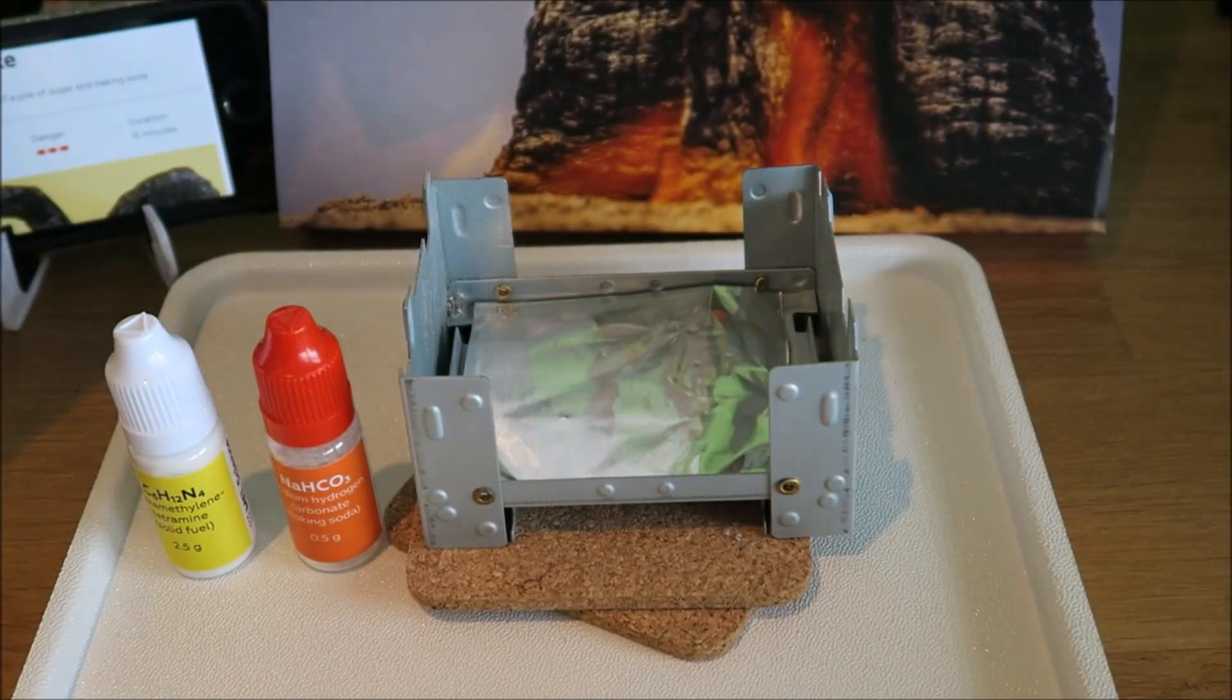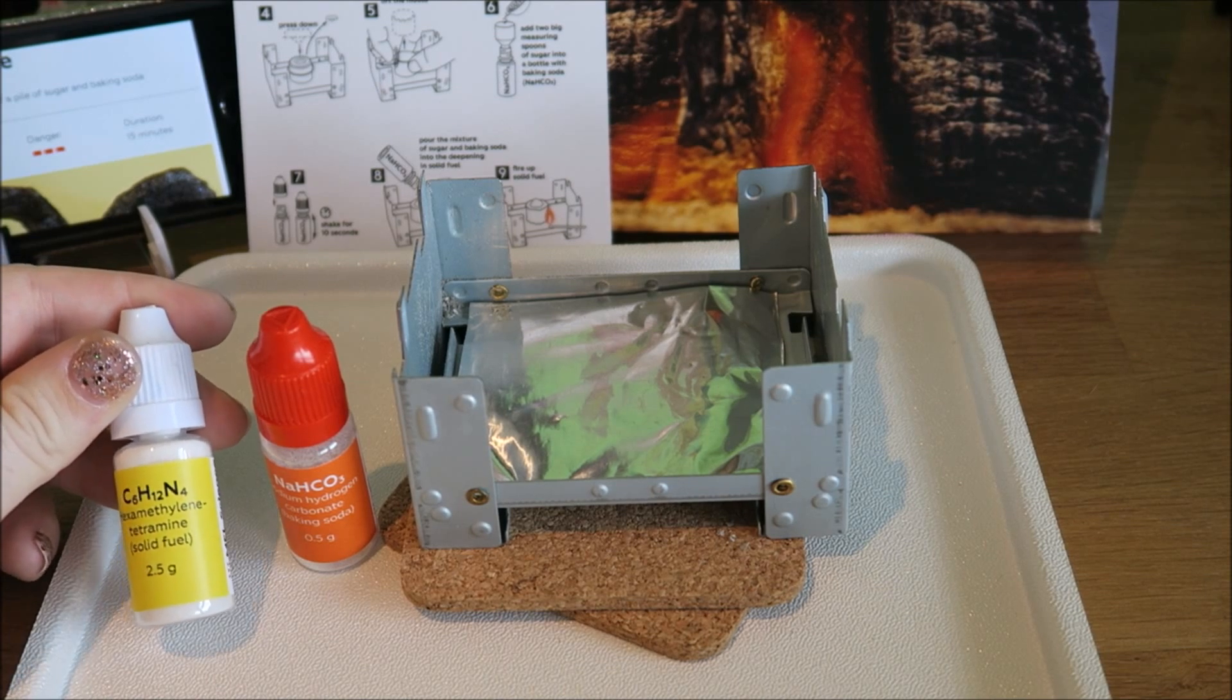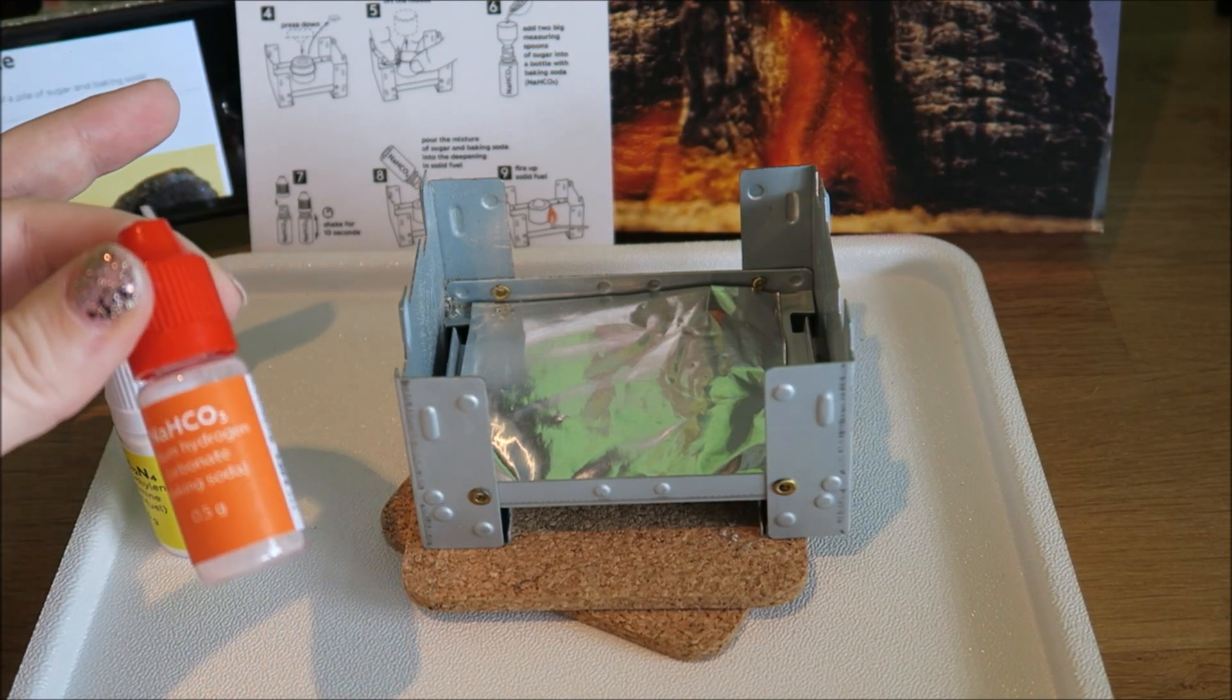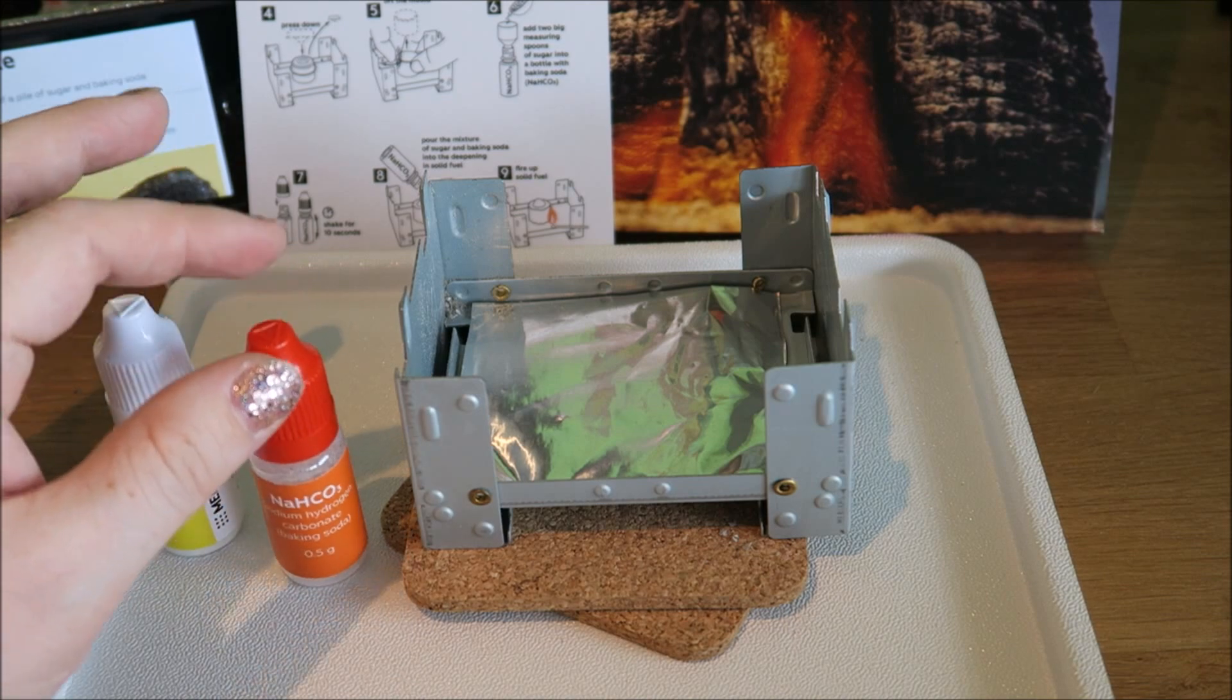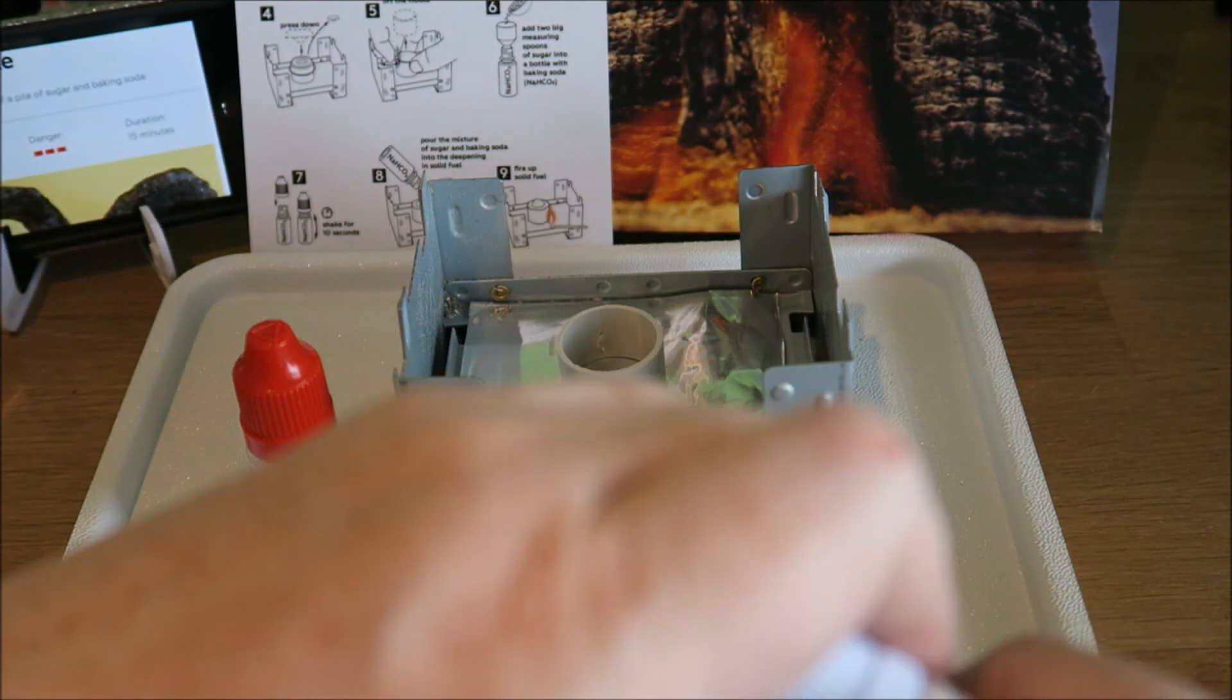For our sugar snake, we have hexamethylene triamine which is our solid fuel, and we have sodium hydrogen carbonate which is baking soda. We need some sugar, have a little mold, put that on there, and the solid fuel all goes in there.